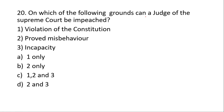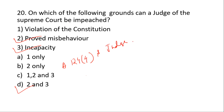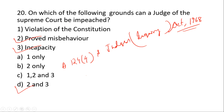The last question is: on which grounds can a judge of the Supreme Court be impeached? The correct option is D — grounds 2 and 3. The process of impeachment is described in Article 124(4) of the Constitution and the Judges Inquiry Act, 1968. The impeachment procedure is the same for all judges of the Supreme Court and High Courts, including the Chief Justice of India. This concludes the MCQ session on Union Judiciary. Thank you.